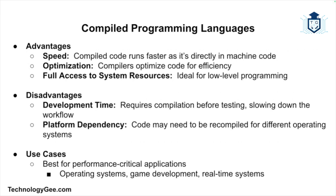Advantages of compiled languages include speed — once compiled, the code runs much faster than interpreted languages because it's translated directly into machine code. Compilers can also optimize code during compilation, resulting in highly efficient programs. Compiled languages allow for low-level access to memory and hardware, making them ideal for system-level programming. Disadvantages include longer development time, since the code needs to be compiled before testing, and platform dependency, as compiled code is often platform-specific and may need to be recompiled for different operating systems. Compiled languages are best suited for operating systems, game development, and real-time systems.